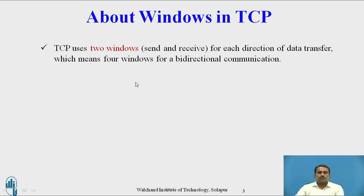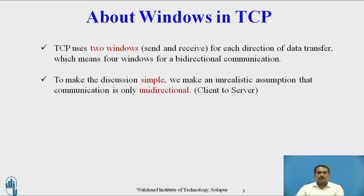TCP uses two windows: the first one is Send window and Receive window. For each direction of data transfer, that means four windows for a bidirectional communication. Bidirectional means while sending and receiving data, we have to use two types of windows each — so four different types in total for bidirectional communication.